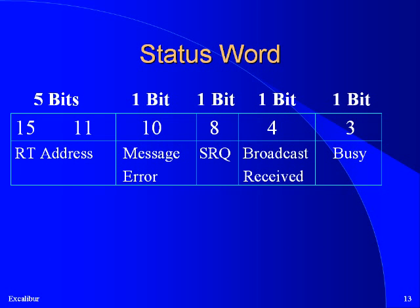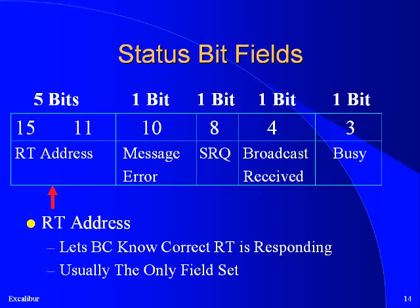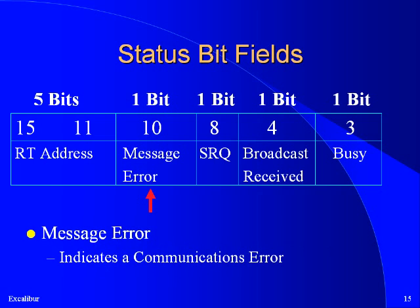The status word is sent by the RT to indicate successful reception of a command word, or for a BC to RT command, successful reception of both the command and data words. The RT responds with its own address followed by a bit indicating that an error has occurred in a previous message. The message error bit does not refer to an error in the current message because RTs do not send the status word if an error is detected.